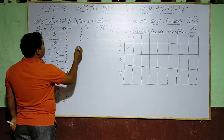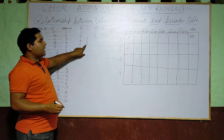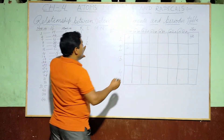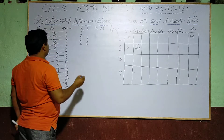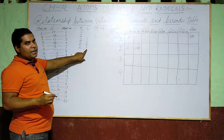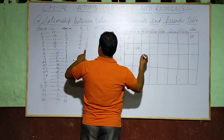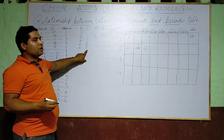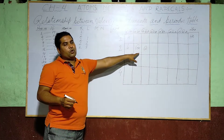Beryllium has atomic number 4, configuration 2 and 2. Two shells are required, so it is placed in Period 2, Group 2A. Boron has atomic number 5, configuration 2 and 3 — it has 3 valence electrons, so it is placed in Group 3A, Period 2.